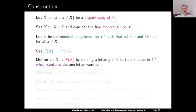Define F(X) as the quotient of Y* by this congruence. By definition, this is a monoid — we took the monoid Y* and took the quotient by a congruence. So F(X) so far is just a monoid. We define the map φ from X to F(X) by sending a letter x to the equivalence class in Y* which contains the one-letter word x.